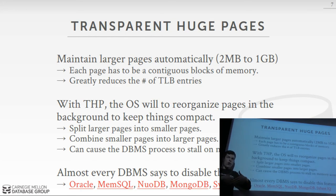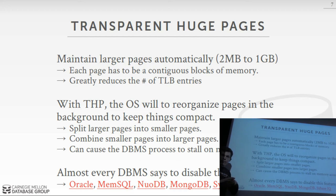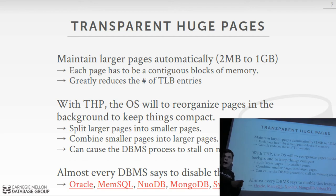If you turn this feature on and start allocating 1 GB pages, the OS will combine smaller pages into larger ones or split larger pages, moving around where memory is actually located. But the problem is: when it starts moving things around, anytime you access memory that's in the process of moving, your process will stall until that operation finishes. For really large in-memory databases this can take seconds — and that's just as bad as going to disk.